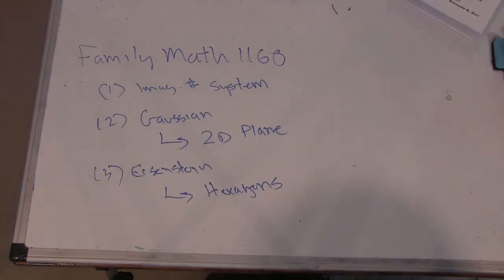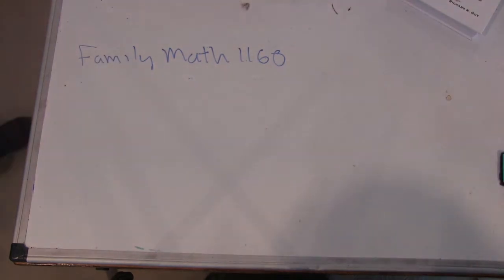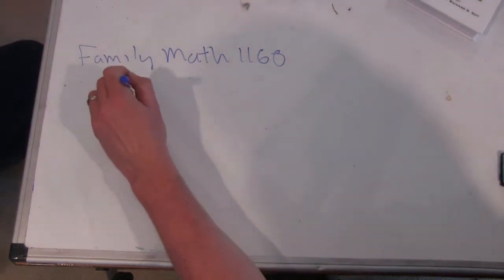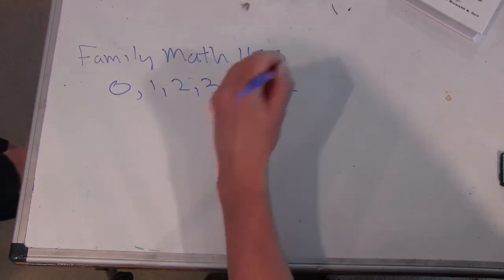Okay, but before we jump into the Gaussian integers, we need to jump back into the regular integers: 0, 1, 2, 3, 4, etc.